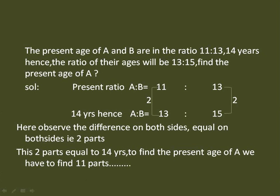The present ages of A and B are in the ratio 11:13. 14 years hence, the ratio of their ages will be 13:15. Find the present age of A. Here, the present ratio of A and B is given, and 14 years hence means after 14 years. Write down the present ratio 11:13 and the future ratio 13:15.